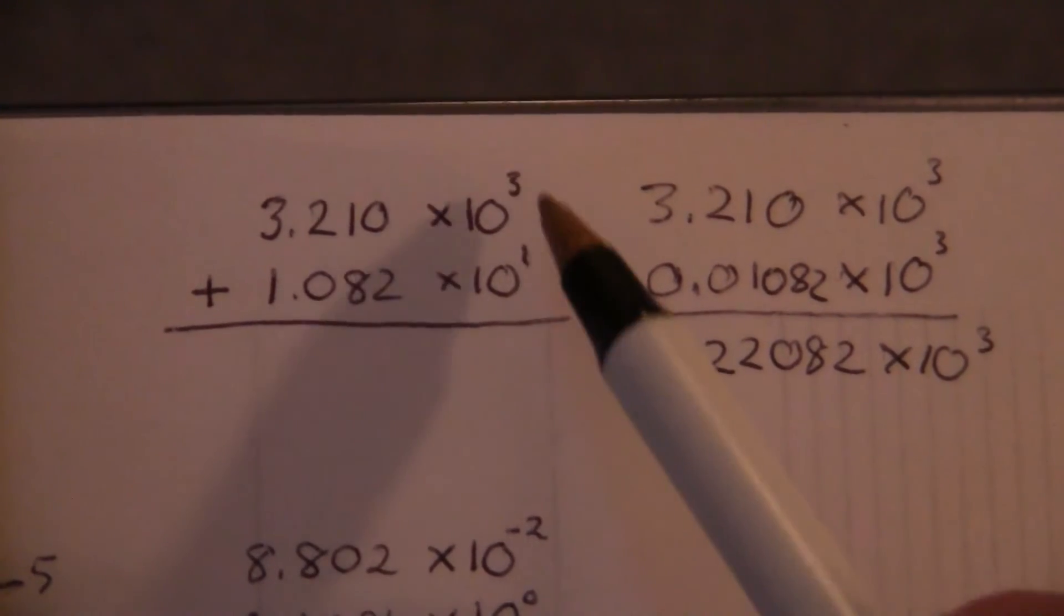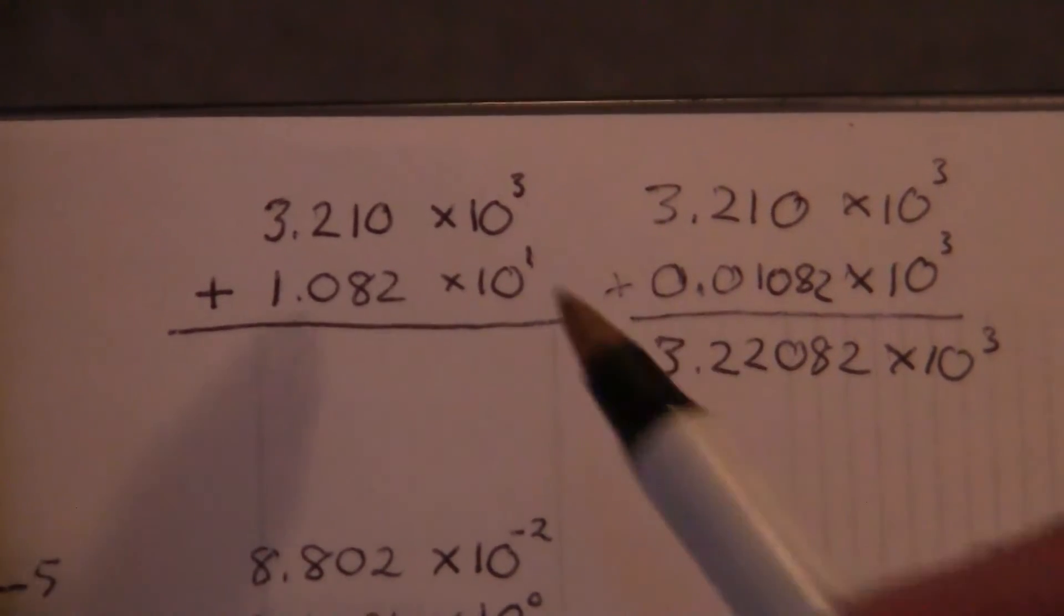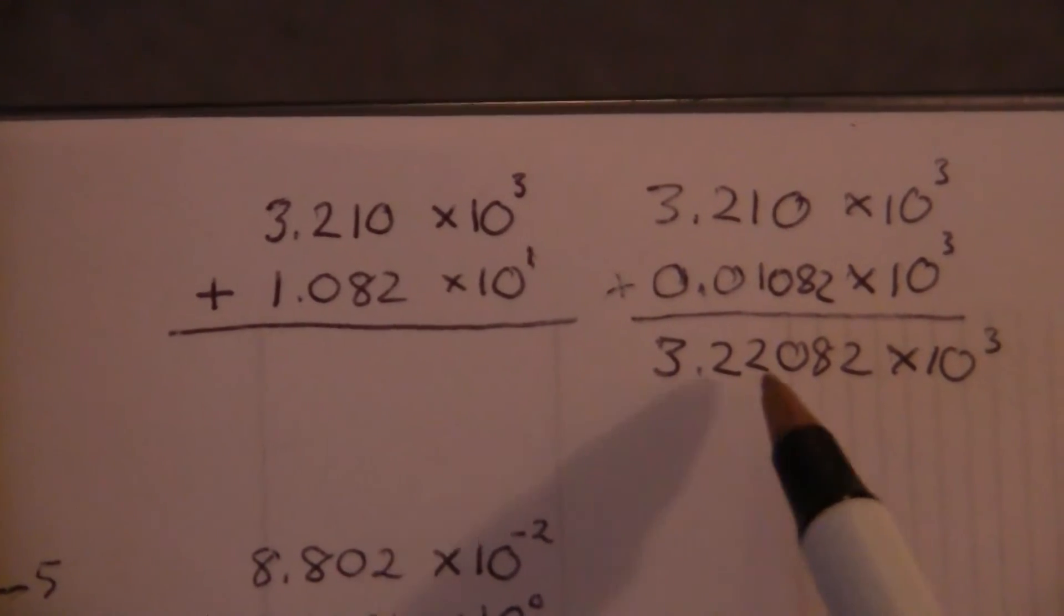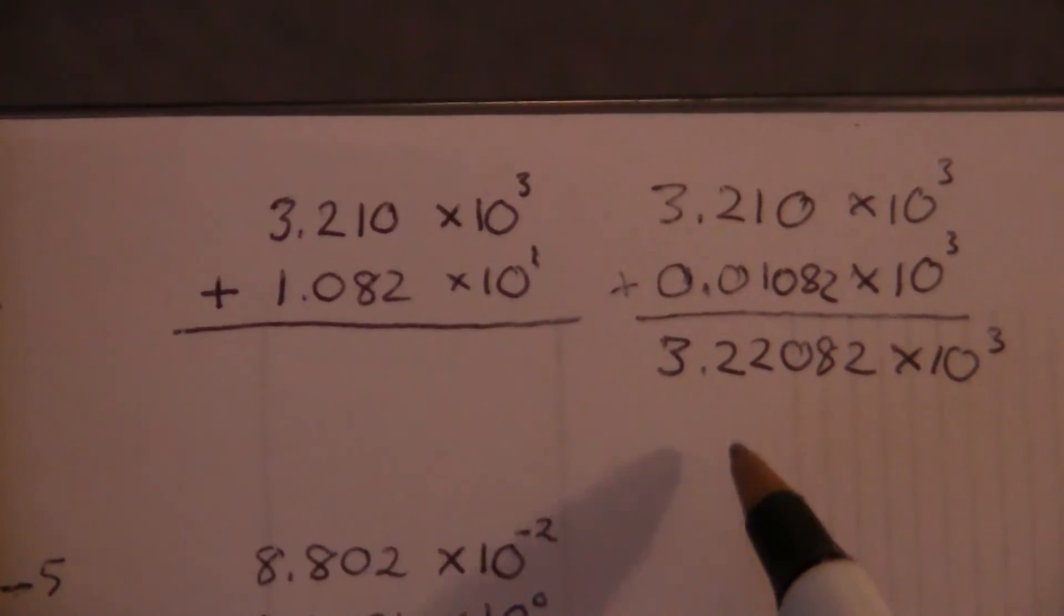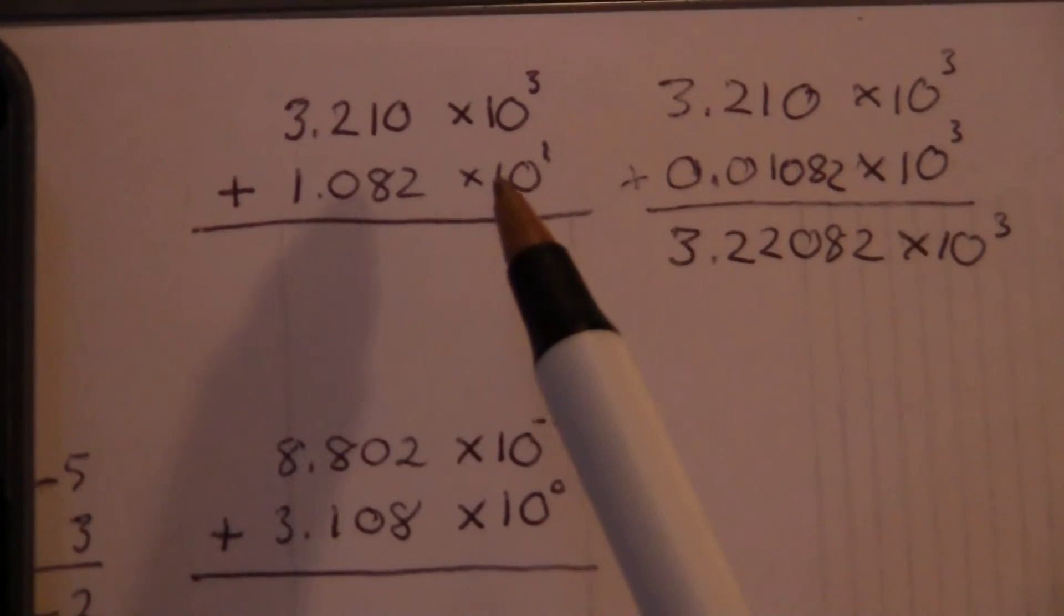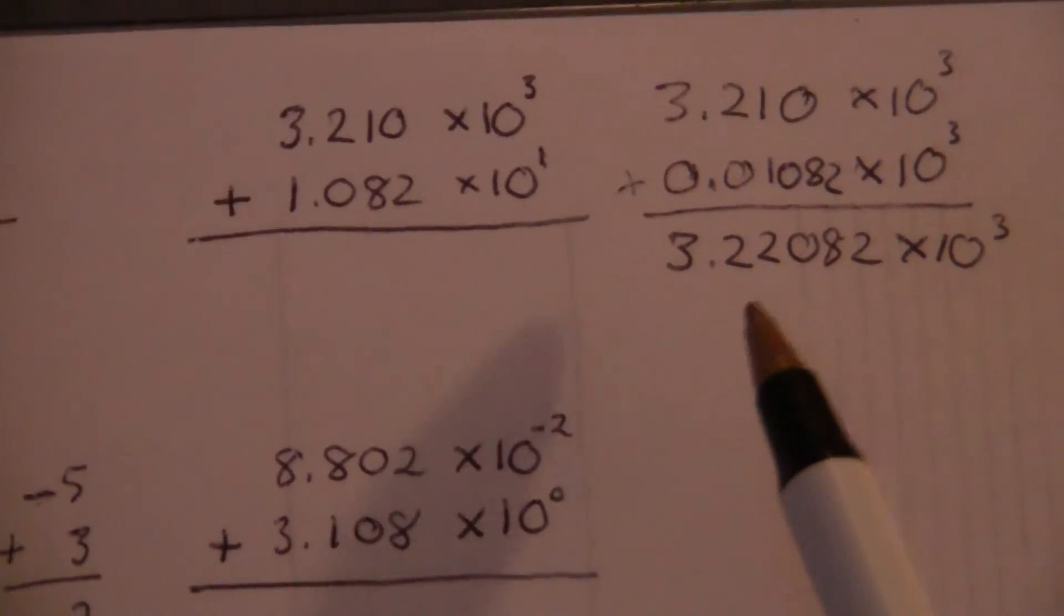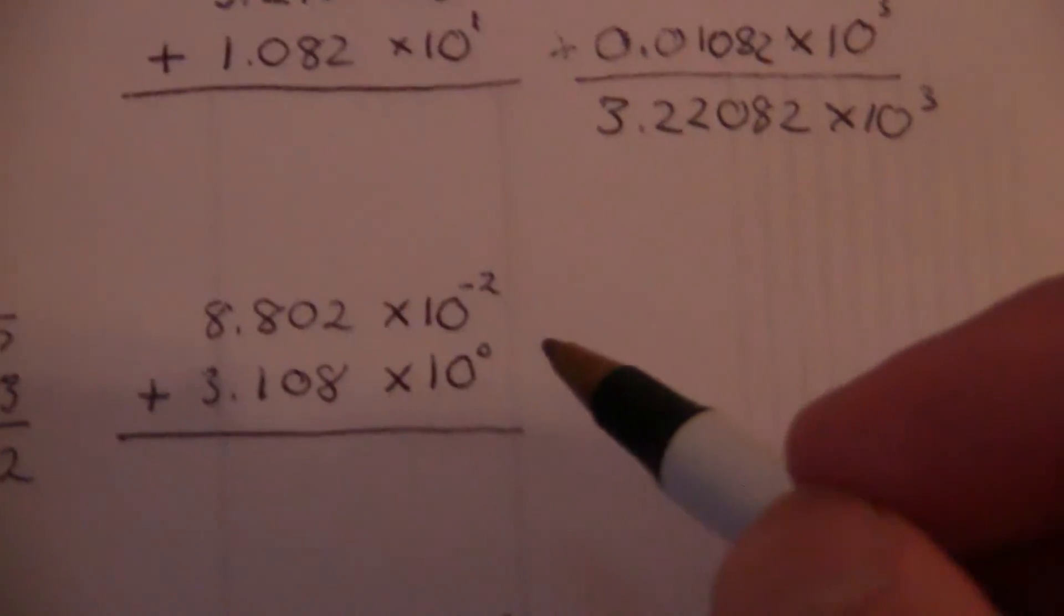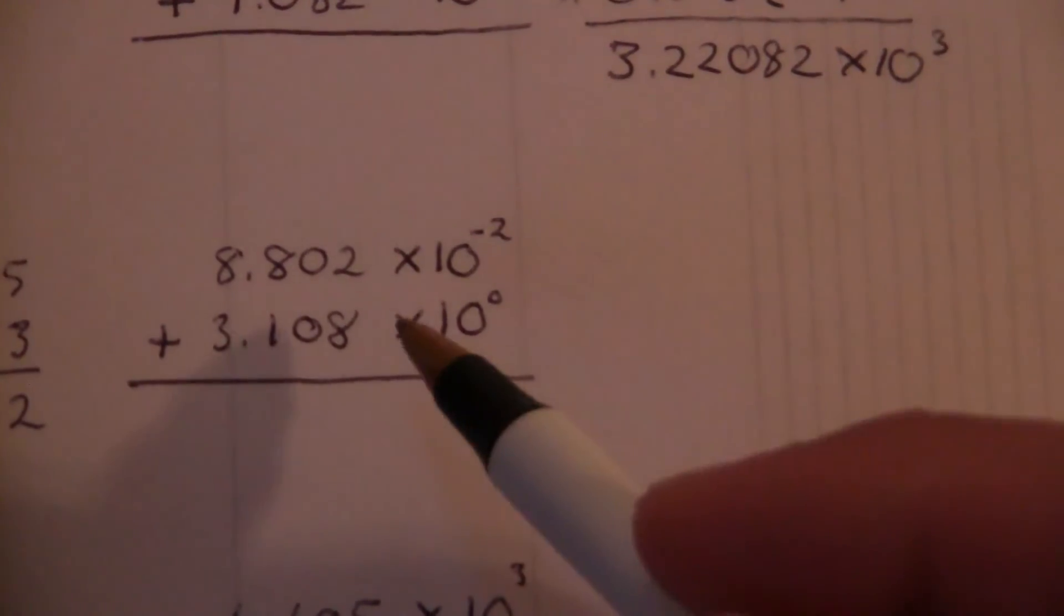And if we had changed them both to the times 10 to the 1, what would happen is, more than likely, it wouldn't be in proper scientific notation. We'd have to do another step. So sometimes this converting to the higher one eliminates that step, and that's why we did that. Let's do another example.